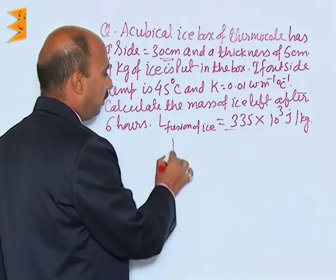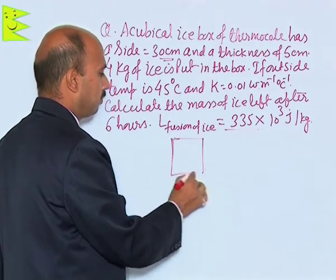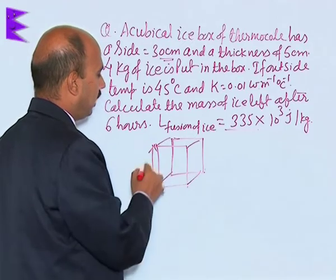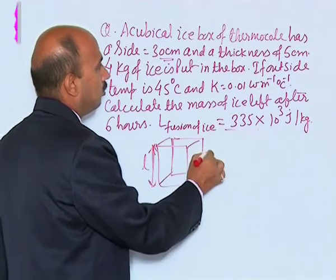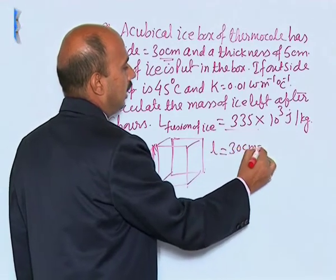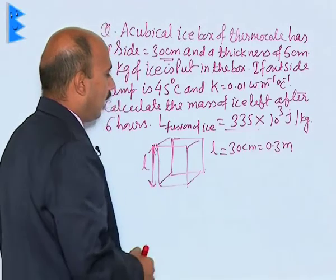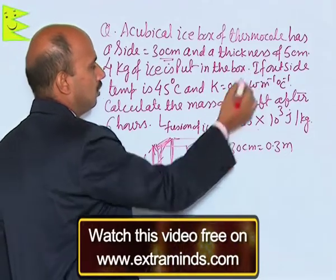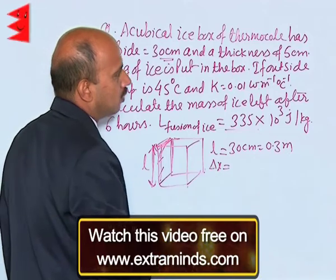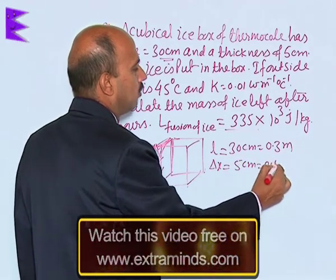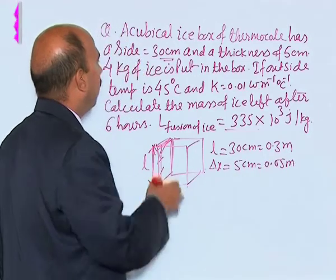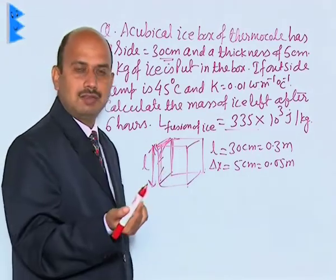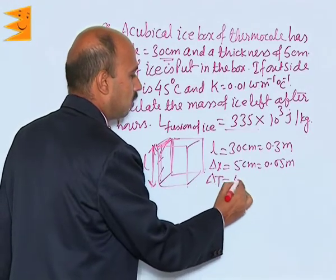We have a cubical box where the side length L is given as 30 centimeters, that is 0.3 meters. The thickness of the sides is given as 5 centimeters, so we can write delta x equals 5 centimeters, that means 0.05 meters. Now, 4 kg of ice is in the box; outside temperature is 45 degrees and inside ice is 0 degrees, so delta T equals 45 degrees Celsius.